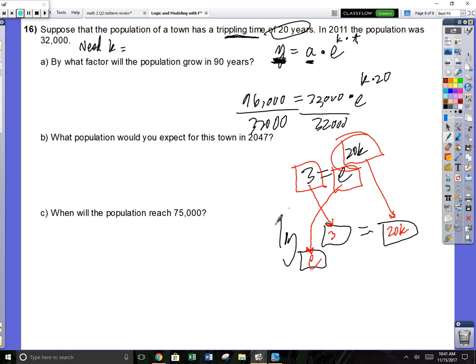You got log base e of 3 equals 20k. Now you punch this in on your calculator and change it to a decimal. Type in log base e of 3. Log base e, that is the natural log, that is LN. If you change this to a decimal, it is like 1.0986 equals 20k. Divide by 20, divide by 20, and you found k. If I divide that by 20, you have k at 0.0549306.